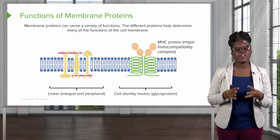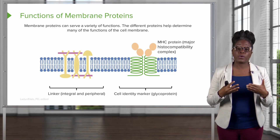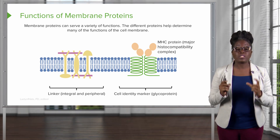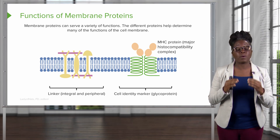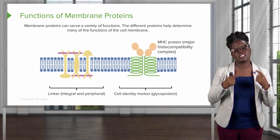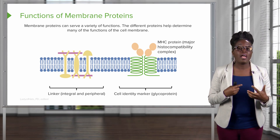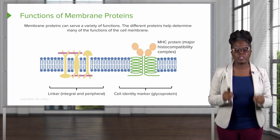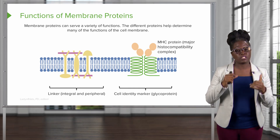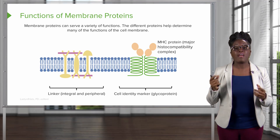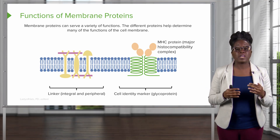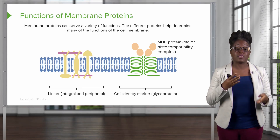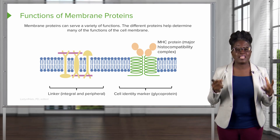Cell identity markers become very important when you think about transplant patients. For example, if I need a heart transplant and I get a heart from someone else, the cell identity markers on that new heart will not match the cell identity markers in the rest of my body. Our immune system will attack that new heart because it does not recognize it as self and therefore recognizes it as foreign. That is why many transplant patients must be on immunosuppressive therapy once they receive a transplant, because of our body's natural defense to anything that doesn't belong.